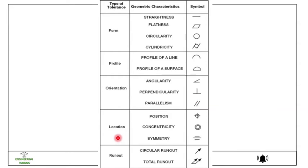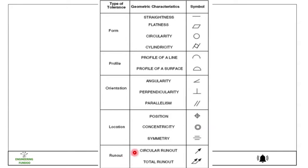The fourth type of tolerance is location. We have position, concentricity, and symmetry, and here you can see the symbol for each of these characteristics. Finally, the fifth category is runout. In this we have circular runout and total runout, indicated by two arrows.